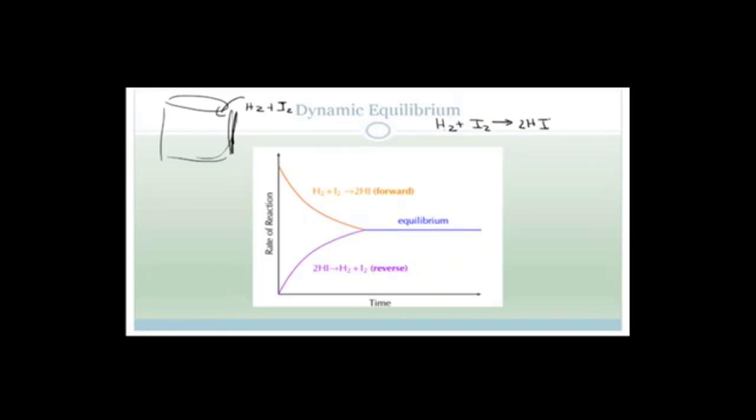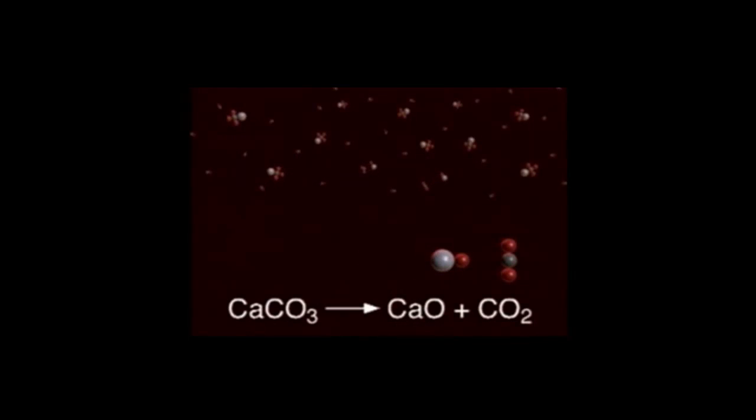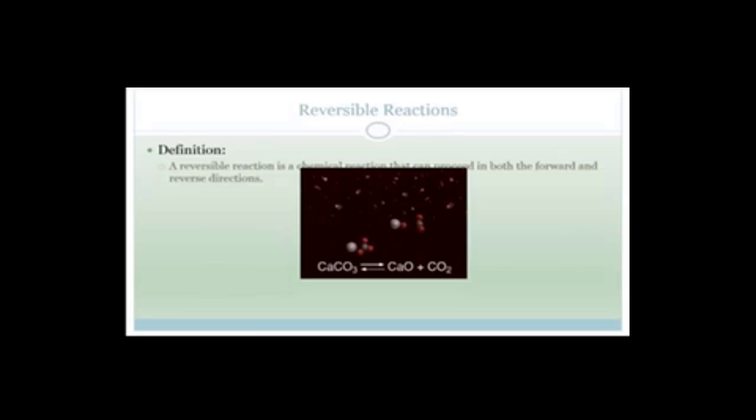But the second that the hydrogen iodide is formed, it starts breaking up and forming hydrogen and iodine, exactly like what happened in this video. You had your calcium carbonate, it broke up immediately into calcium oxide and carbon dioxide. The minute that the calcium oxide and carbon dioxide are formed, they immediately start forming carbonate again. But dynamic equilibrium is reached when the rate at which they're forming and breaking up is the same.